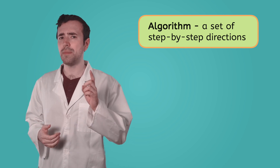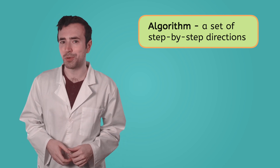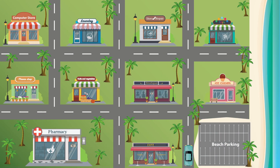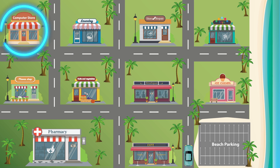Since my app isn't working, maybe you can help build an algorithm to help me and Mia find the nearest computer store. An algorithm is a set of directions. We're over here, and we need to get over there to the computer store. What direction do we need to go first? Okay — straight. We come to an intersection. Pause the video and design an algorithm, or a set of directions, to get us to the computer store in your guided notes.